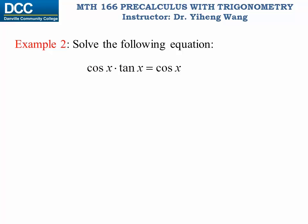Let's look at this example. We need to solve the equation: cosine x multiplied by tangent x equals to cosine x. When you look at this equation, if you want to cancel out cosine x from both sides and get the simplified version that tangent x equals to one, that will be incorrect, because by doing this you are missing the solution where cosine x equals to zero, which also makes this equation valid.